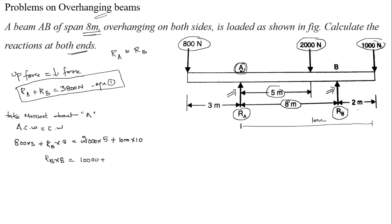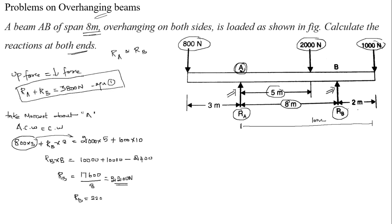So 10,000 plus 10,000 minus 800 into 3, which is 2400. RB equals (10,000 plus 10,000 minus 2400) divided by 8, which equals 17,600 divided by 8, which equals 2200 Newton. So RB equals 2200 Newton.